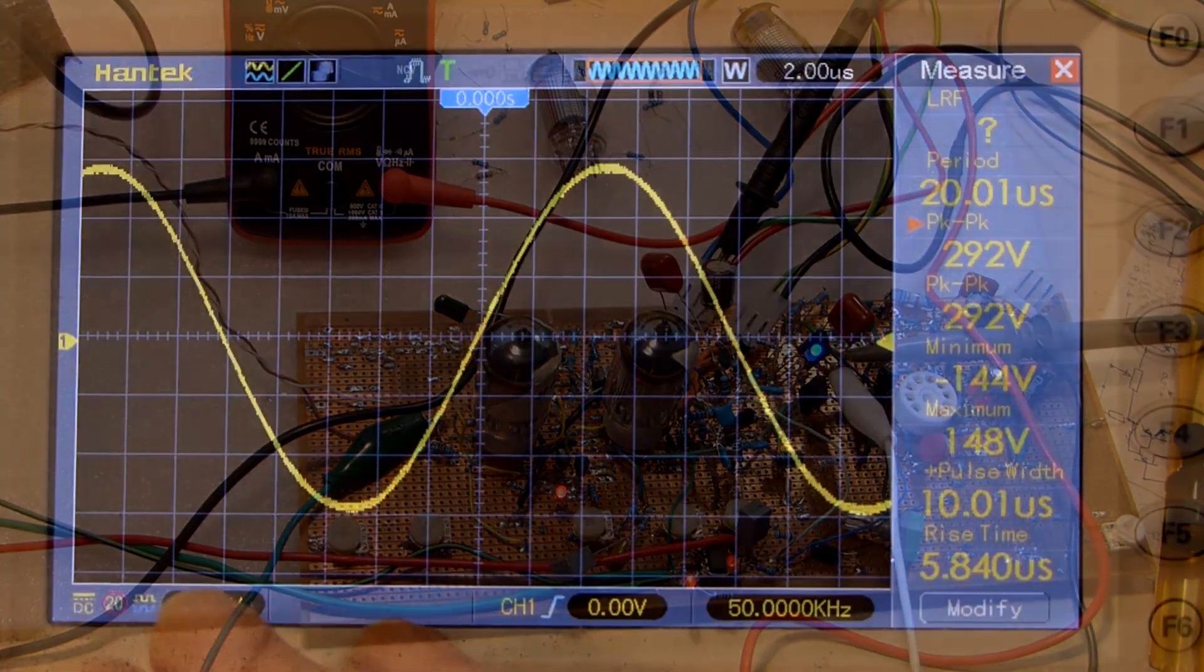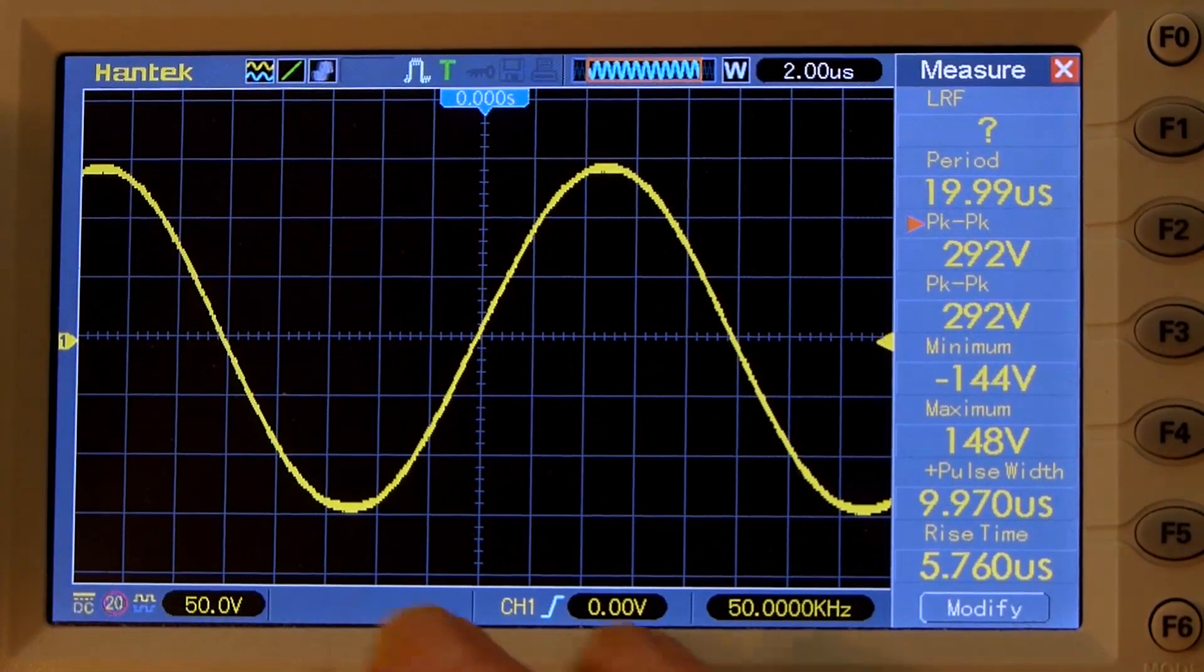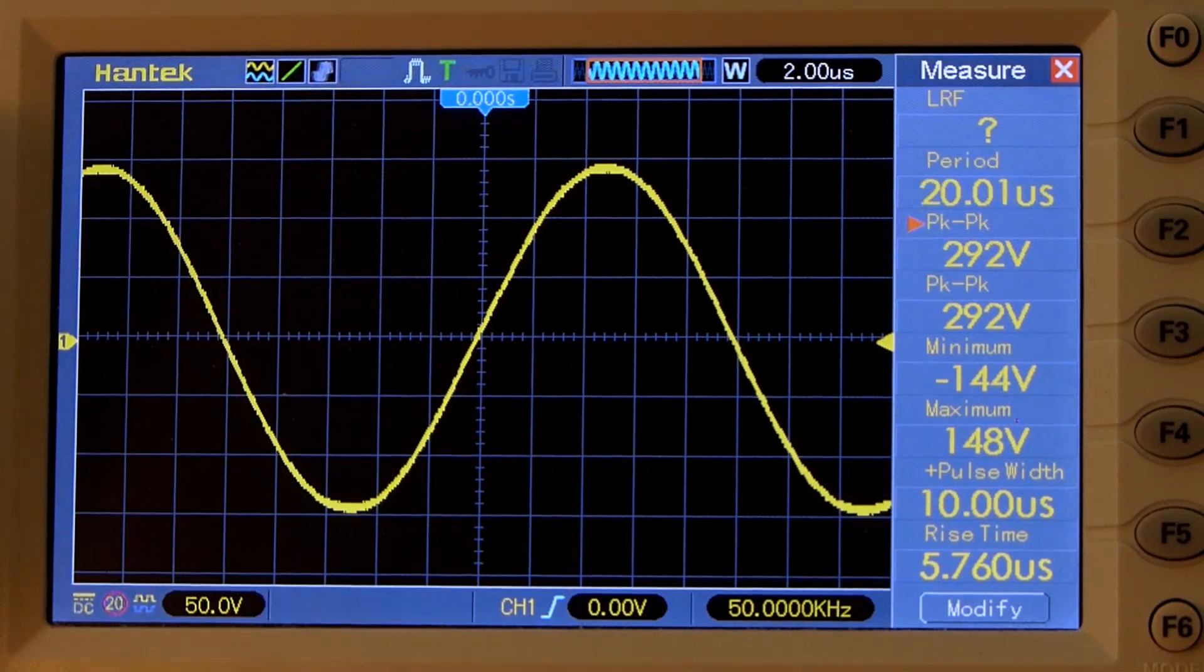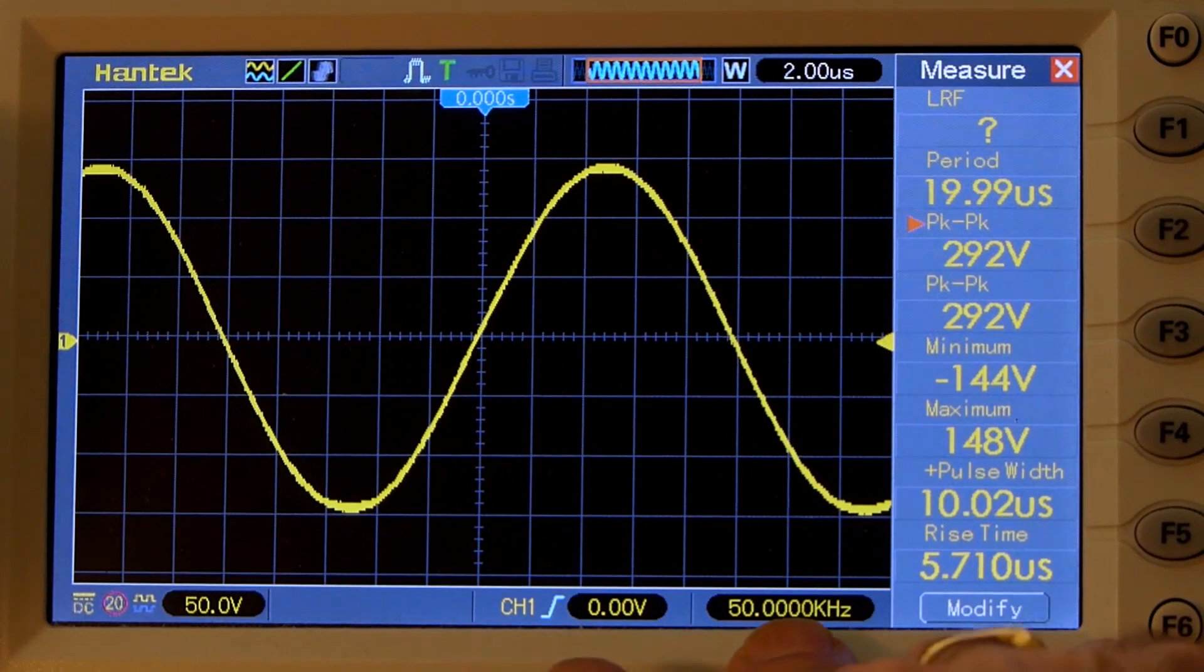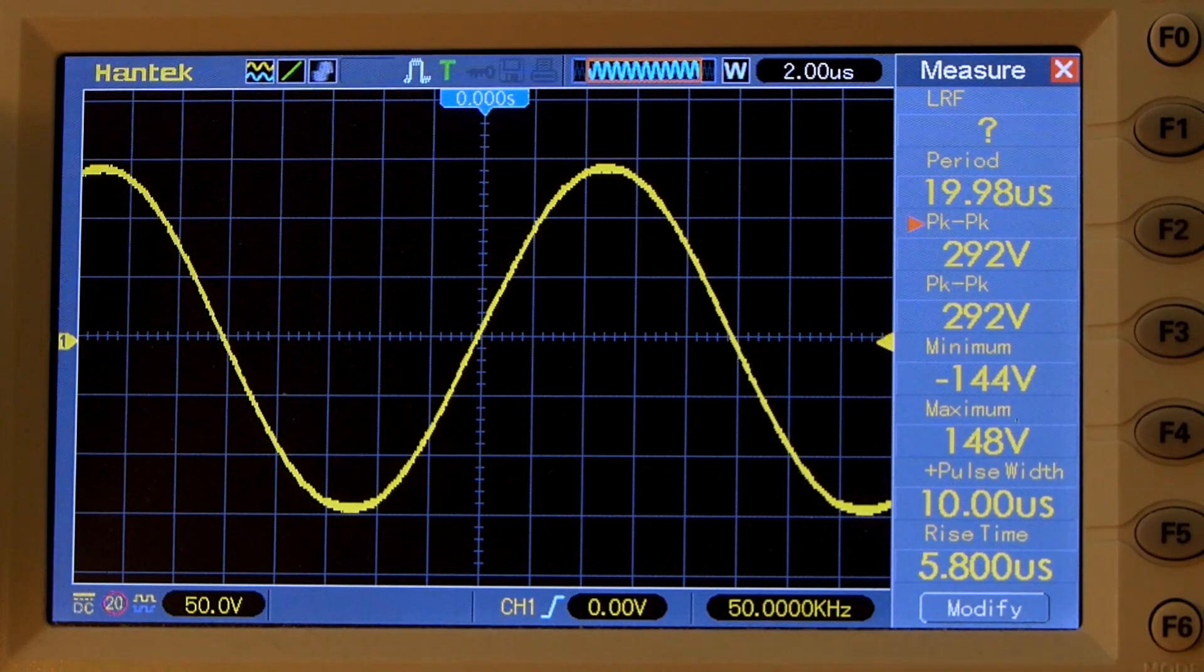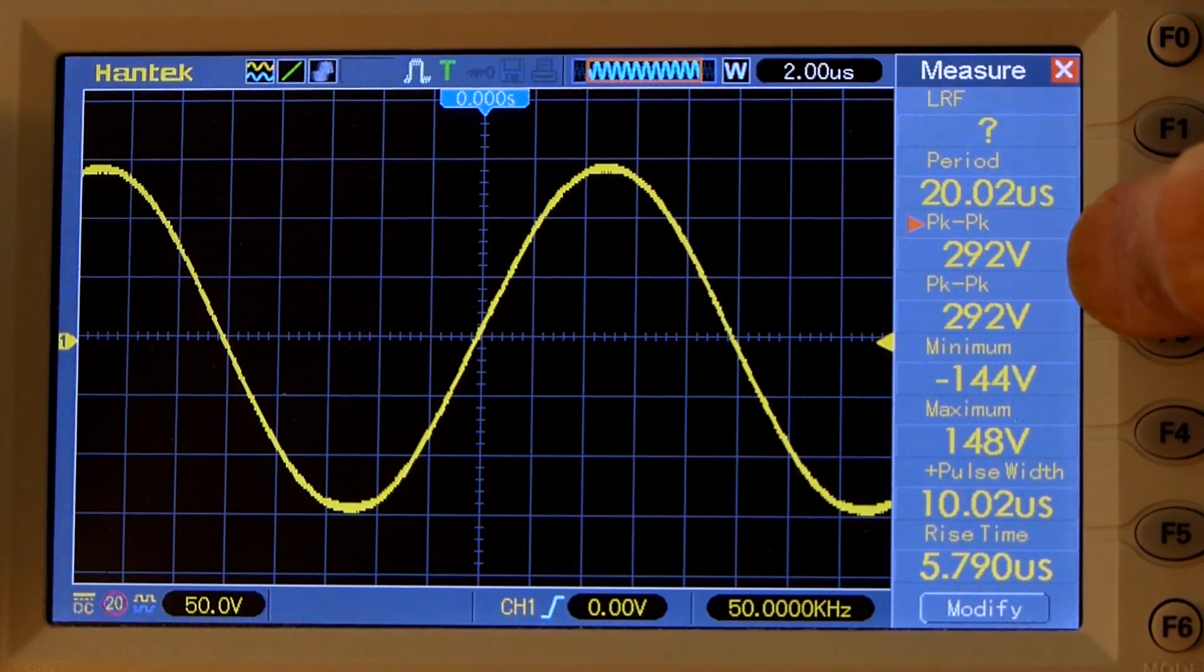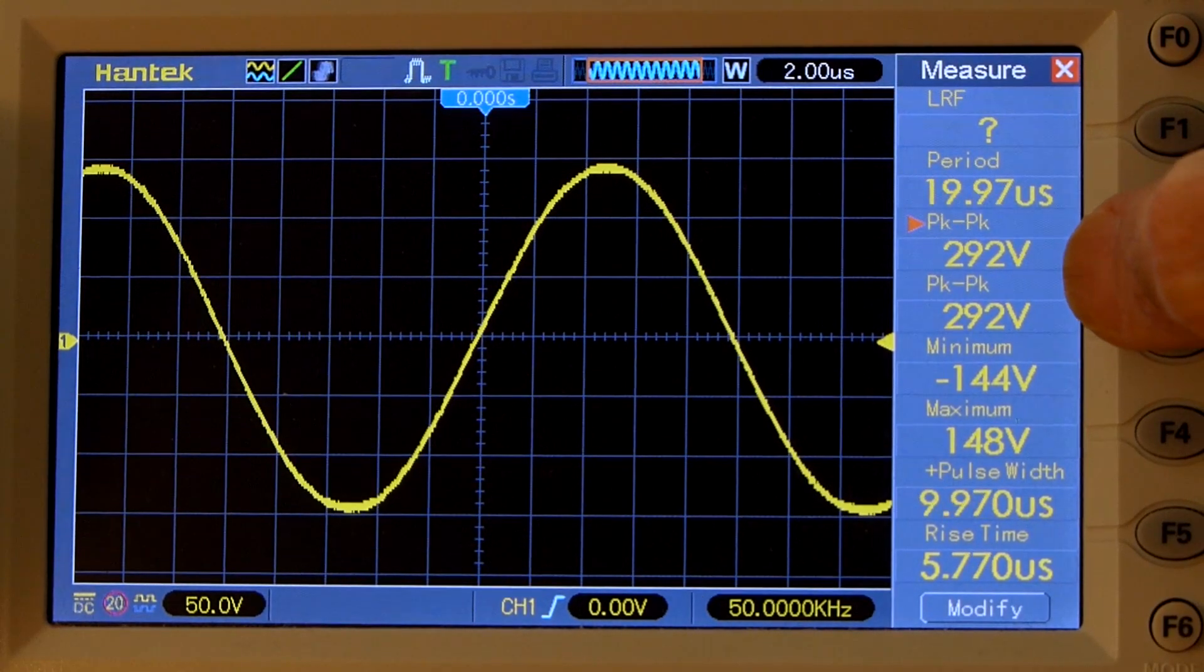I'd like to show you quickly in the scope the huge headroom that this circuit offers. You can see we have a sine wave. The frequency is 50KHz, way beyond the audible range, and we have a 292V peak-to-peak signal level.